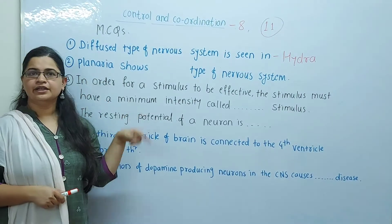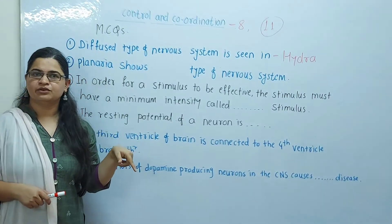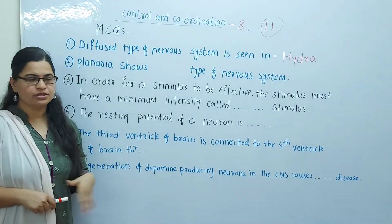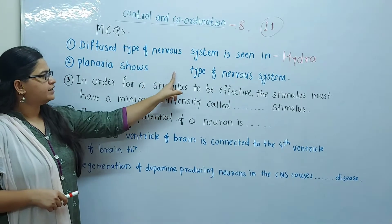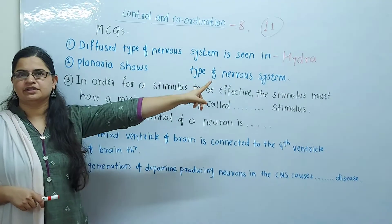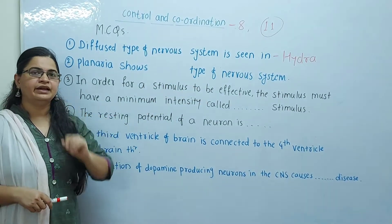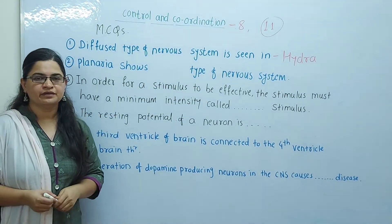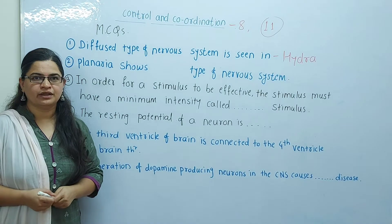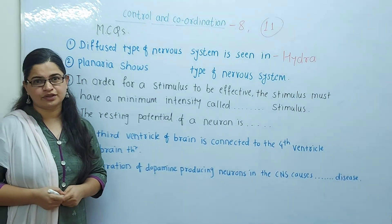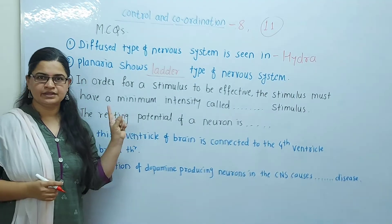The next question is about Planaria. Planaria shows which type of nervous system? Planaria shows a ladder type of nervous system — it shows a ladder type of nervous system.